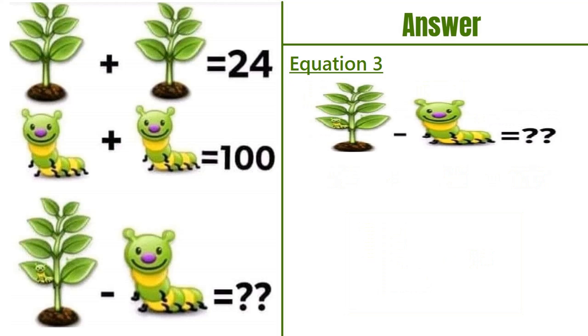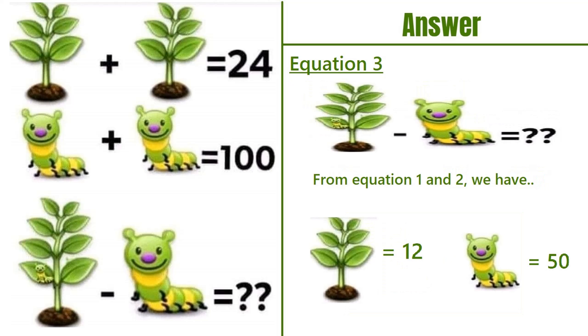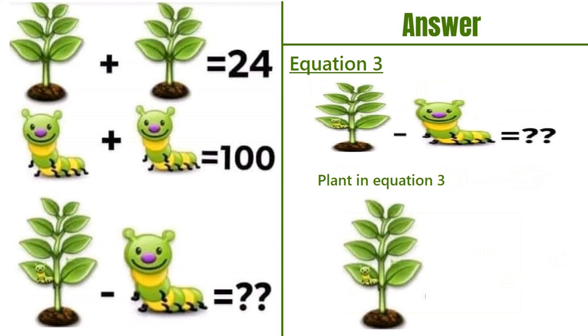Moving on to the last equation, equation number 3. From equations 1 and 2, we have a plant equals 12 and a caterpillar equals 50. The plant in equation number 3